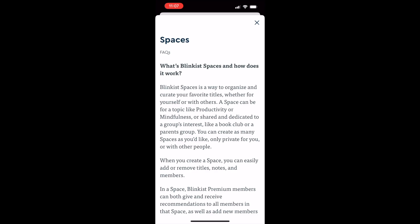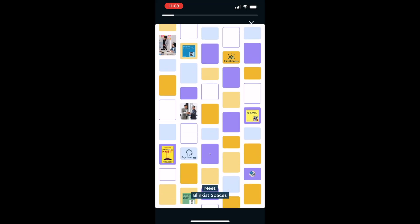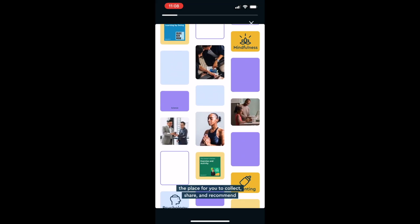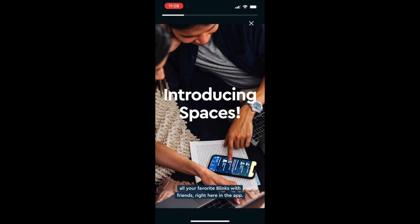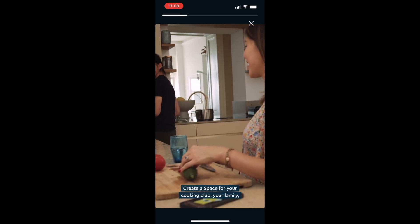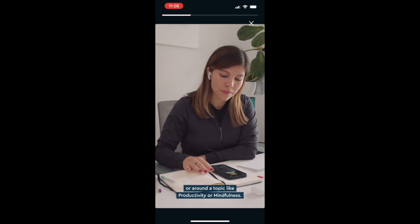And Blinkist just launched a new feature called Blinkist Spaces. It's a really cool feature that allows you to create a space with your friends or family to share and discuss your favorite titles. It's kind of like having a portable book club in your pocket, accessible anytime, anywhere.